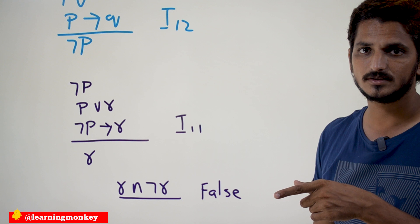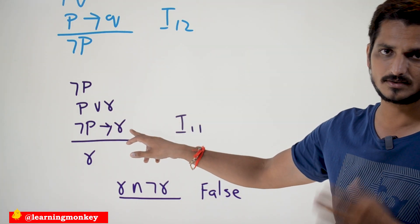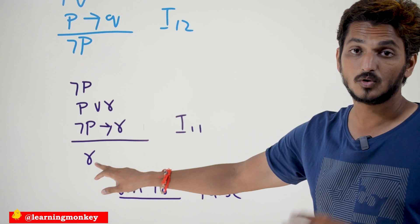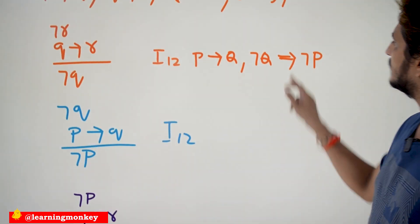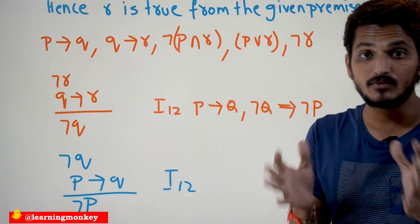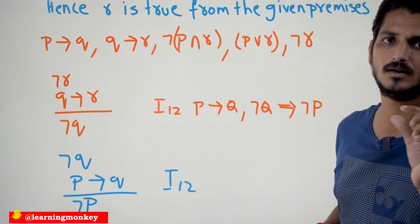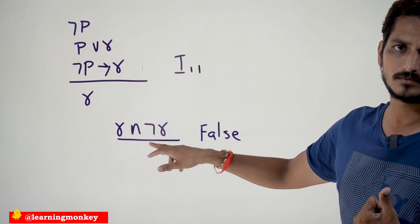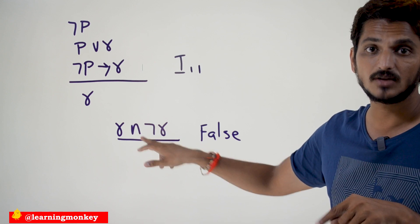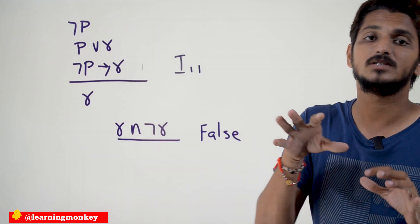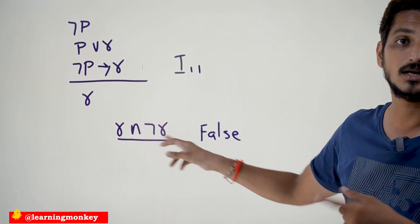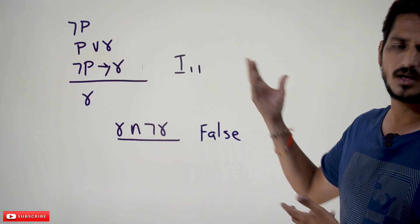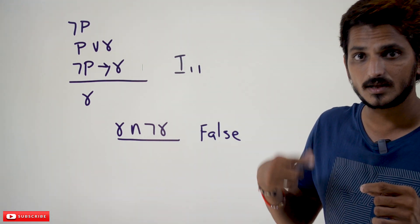So from the set of premises, we have derived one more premise which is R. In the set of premises we are having R, and in the set of premises we are having negation R. In between two premises we can place conjunction — R conjunction negation R is always false. So we showed false from the premises. Our assumption that R is false is wrong.